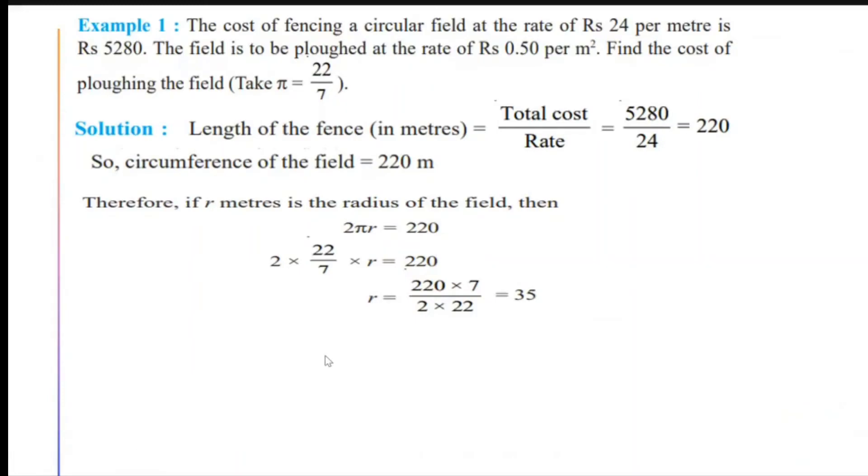Area of the circular field is given by πR². So if I put π as 22 upon 7 and R equal to 35, I get 22 upon 7 into 35 into 35. 7 and 35 cancels by 7 giving 5. So I get 22 into 5 into 35 meters square area.